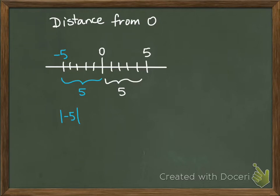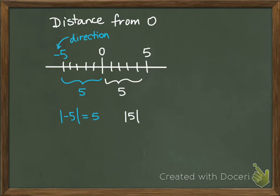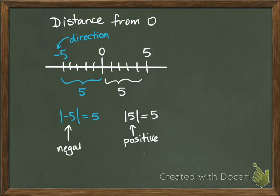We don't care about the negative. Negative only tells us direction anyway — it just tells us we're going to the left. So absolute value just takes the negative away. It gives us just the number all by itself. So the absolute value of negative five is five. If we put positive five inside of an absolute value, it's still just asking for our distance, so the absolute value of positive five is also five. If this is a positive number, the sign doesn't change. If this is a negative number, the sign changes. It takes whatever's inside the goal posts and makes it positive, because we're stripping direction away and just wanting the number itself.